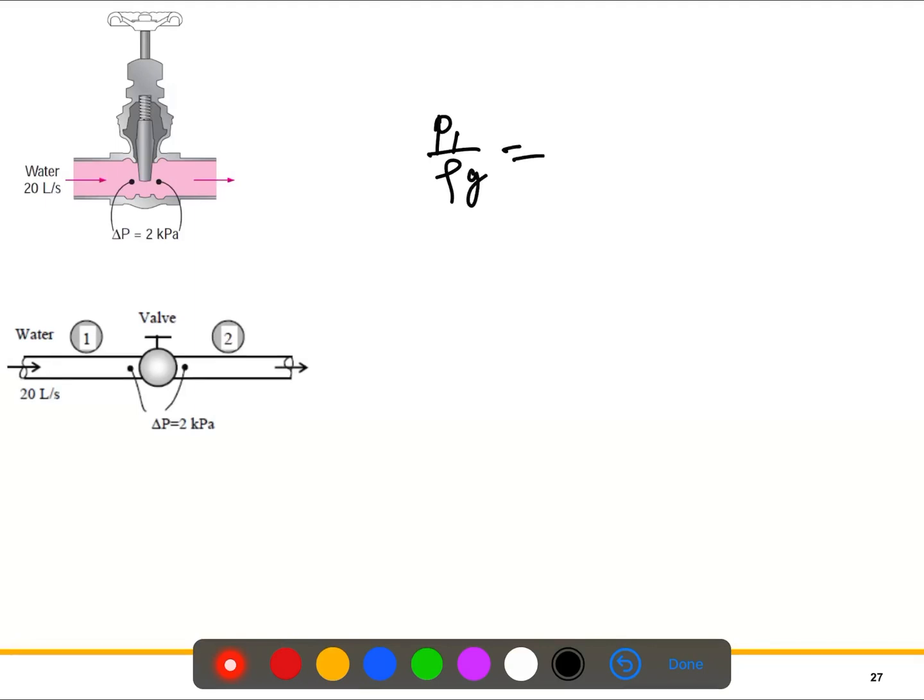Or in other words, the head loss is (P1-P2)/(ρg). So P1 minus P2, that's the pressure difference. You see it is given as 2 kPa.